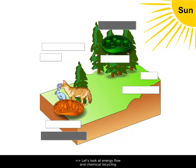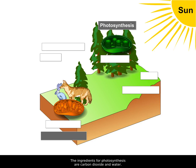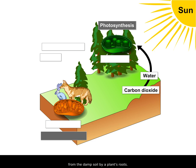Let's look at energy flow and chemical recycling in an ecosystem, starting with photosynthesis. The ingredients for photosynthesis are carbon dioxide and water. Carbon dioxide is obtained from the air by a plant's leaves, and water is obtained from the damp soil by a plant's roots.